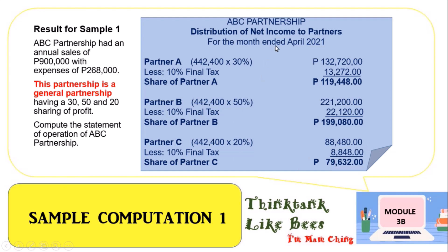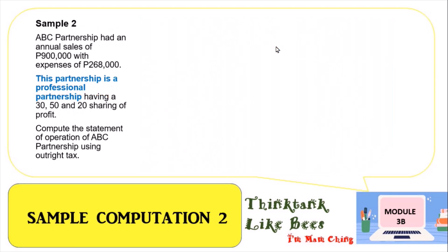For sample computation number two, the example is a professional partnership. We use the same figures — annual sales of 900,000, expenses of 268,000 — but this partnership is a professional partnership. We will compute this using the 8 percent outright tax.